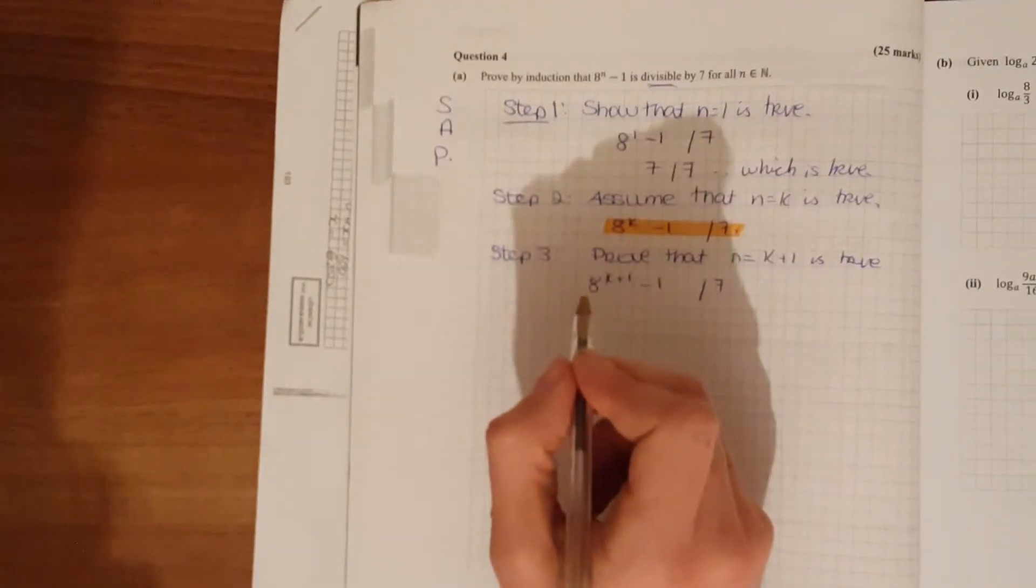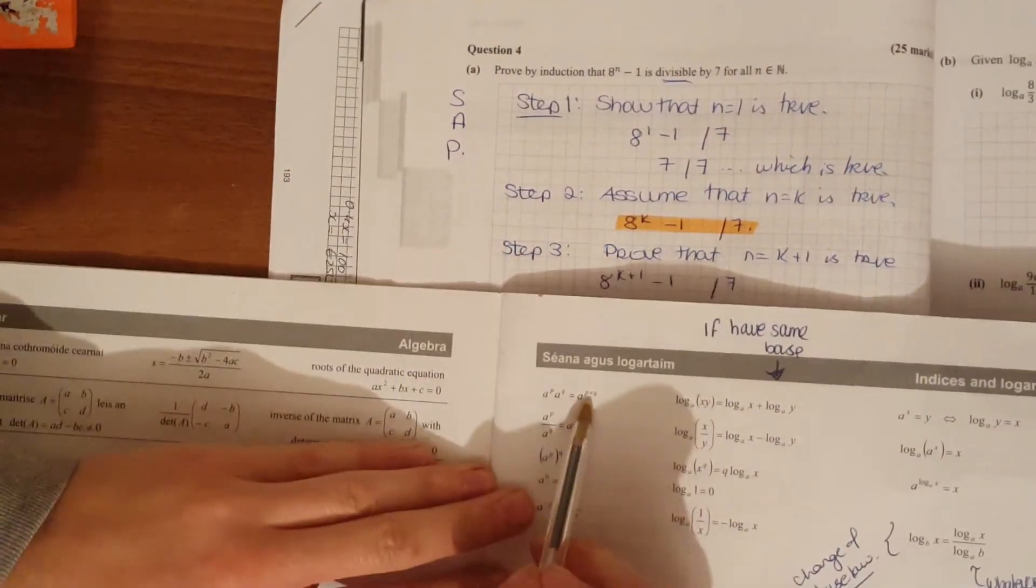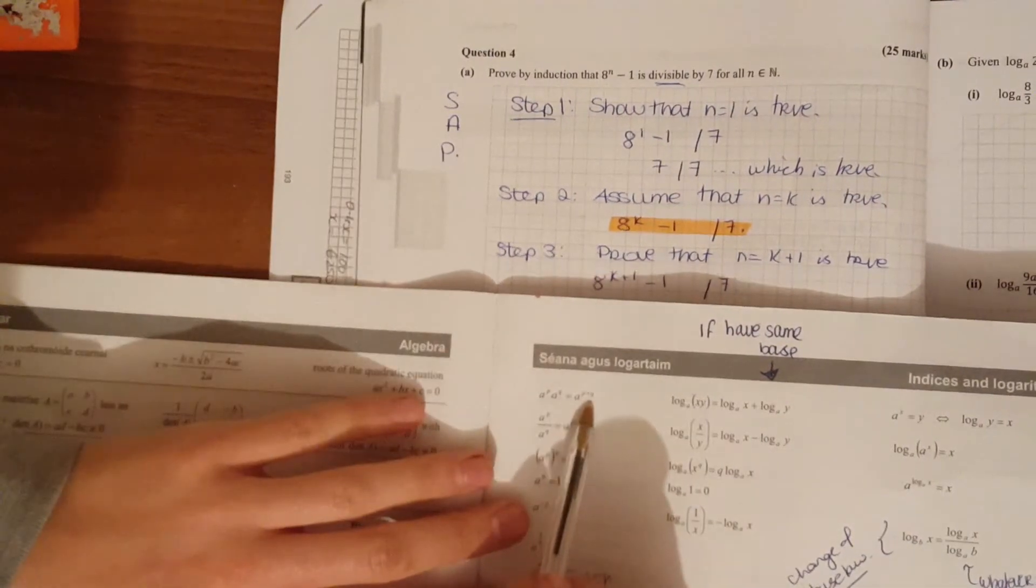Now in this, you're going to have to reuse your laws for indices. You're basically working backwards from this here on page 21 of your formula book.